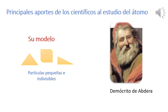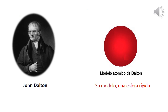Vamos a hablar del modelo atómico. A través de la historia, muchos científicos han estudiado el modelo atómico. Demócrito fundamentó que todas las cosas materiales estaban formadas por partículas muy pequeñas e indivisibles, a las que llamó átomos; su modelo era el de partículas pequeñas sin forma definida. John Dalton planteó la teoría atómica: los elementos están formados por partículas pequeñas e indivisibles llamadas átomos, los compuestos están formados por átomos de más de un elemento, y en una reacción química los átomos no se crean ni se destruyen. Su modelo fue una esfera rígida.